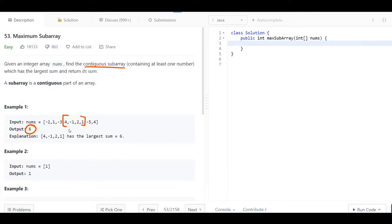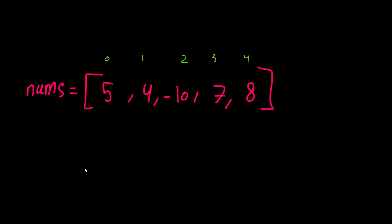Let's go to the blackboard and explain the approach. I have written a nums array containing five, four, negative ten, seven, and eight. Looking at this, we can say the maximum sum we can get from a contiguous subarray is 15, since seven plus eight gives us 15. So how can we get this? A brute force approach would be to calculate all possible contiguous subarrays.